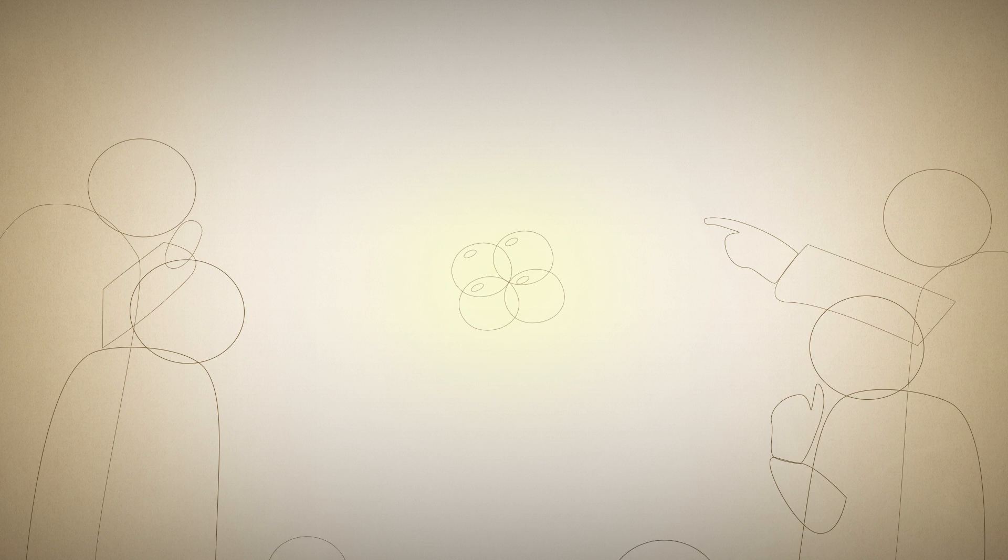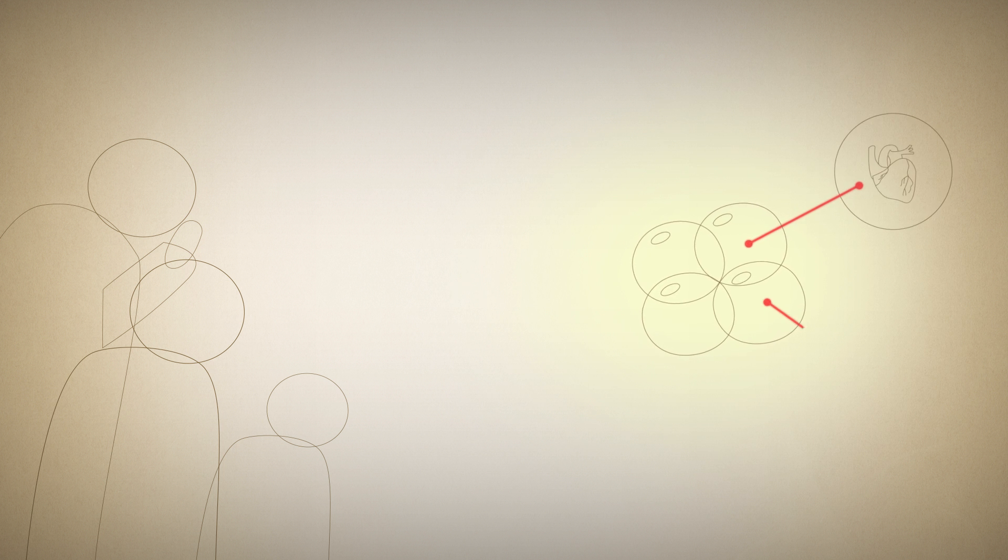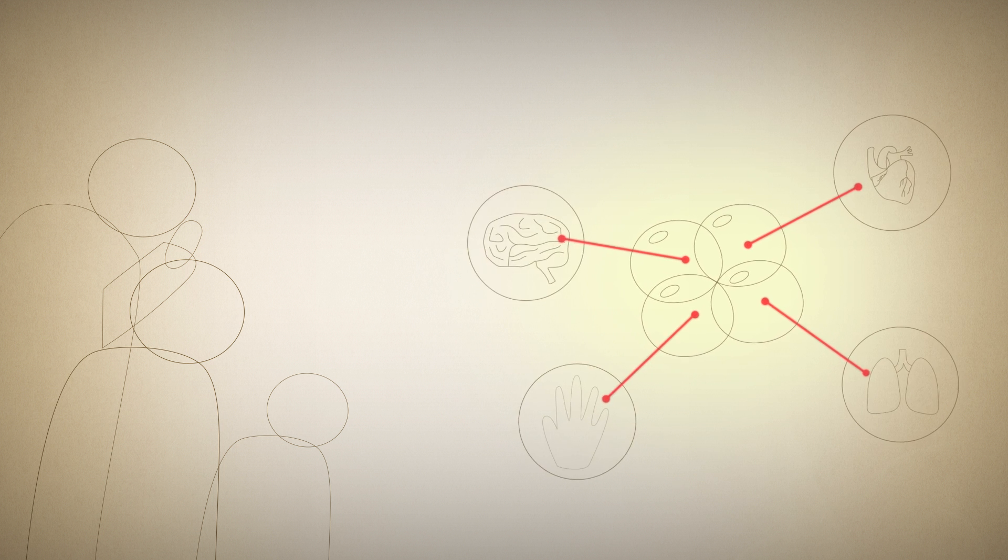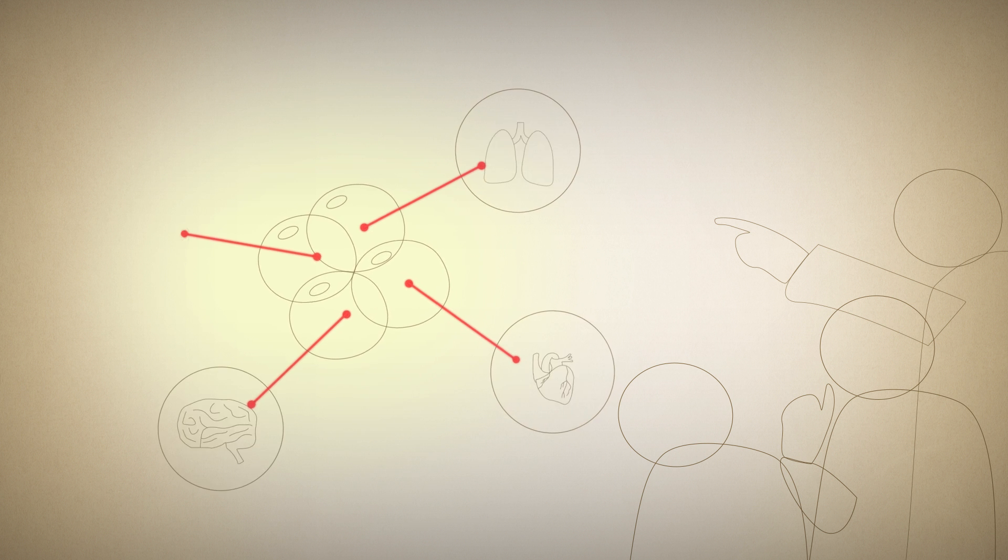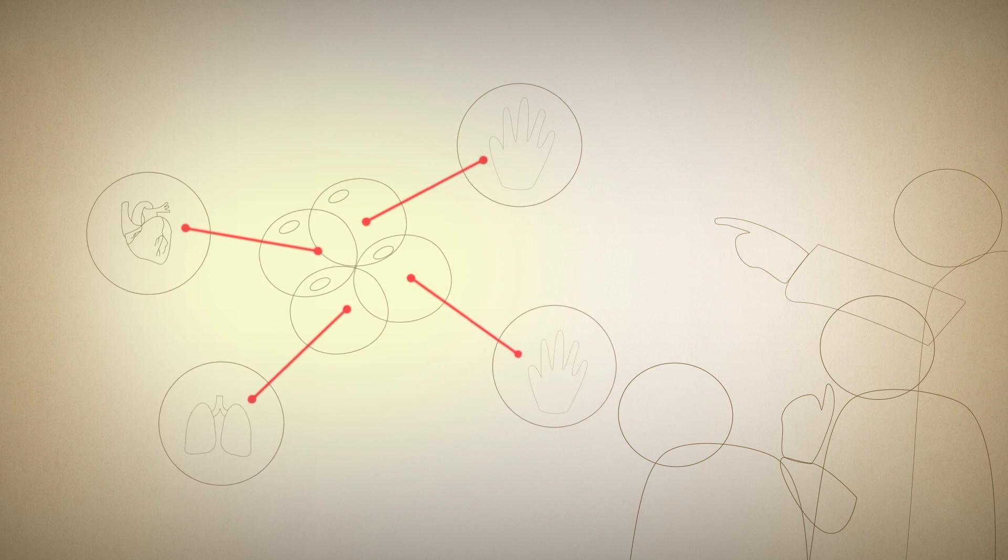At the time, scientists held two different views on embryonic cells. Some thought that cells were pre-programmed to form organs. Others believed cells were just randomly assigned to form organs way down the line.